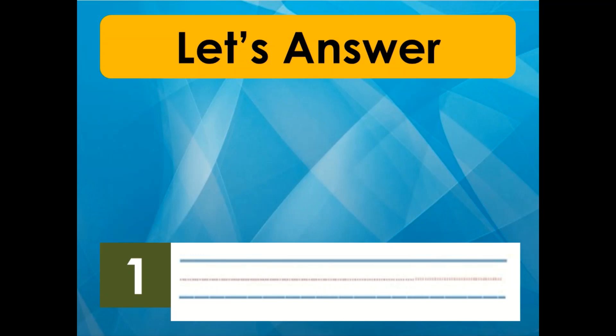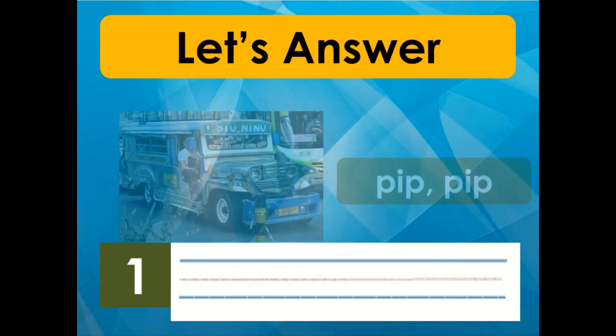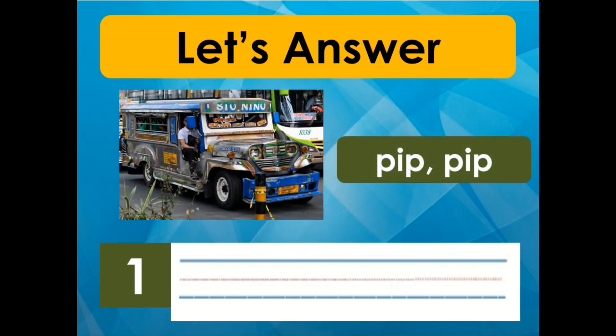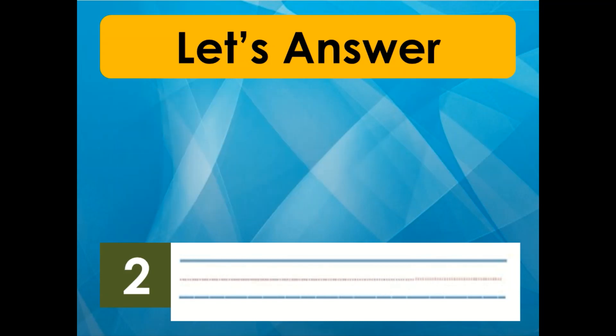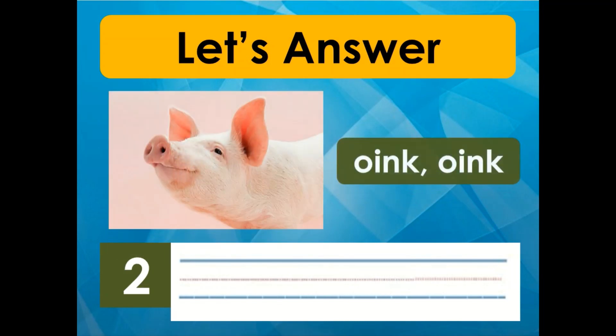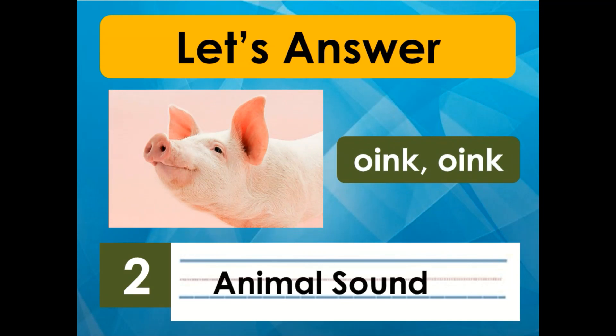Now, are you ready to know the answers? Let's answer them together. Number one — that's correct, it's a vehicle sound. The jeep sound, beep beep, is a vehicle sound. Number two — that's correct, it's an animal sound. The pig sound, oink oink, is an animal sound.